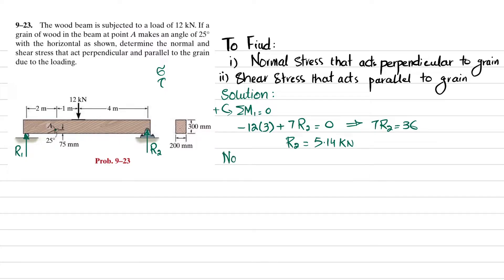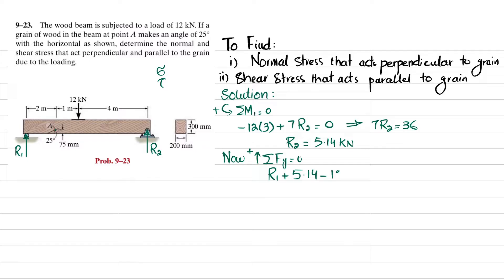Now find R1 using the sum of forces in the y-direction equals zero, with upward forces positive. R1 + R2 − 12 = 0. Substituting R2 = 5.14: R1 = 12 − 5.14 = 6.86 kilonewtons.